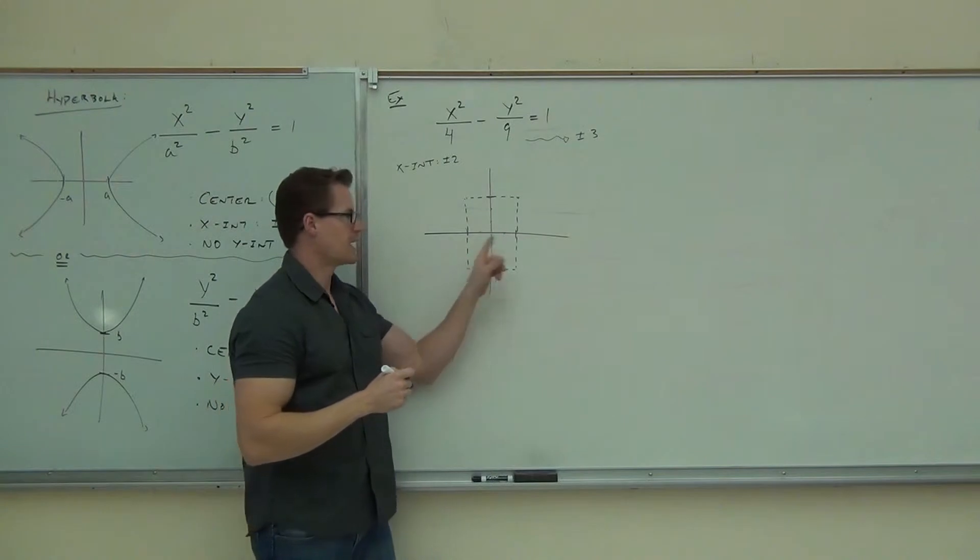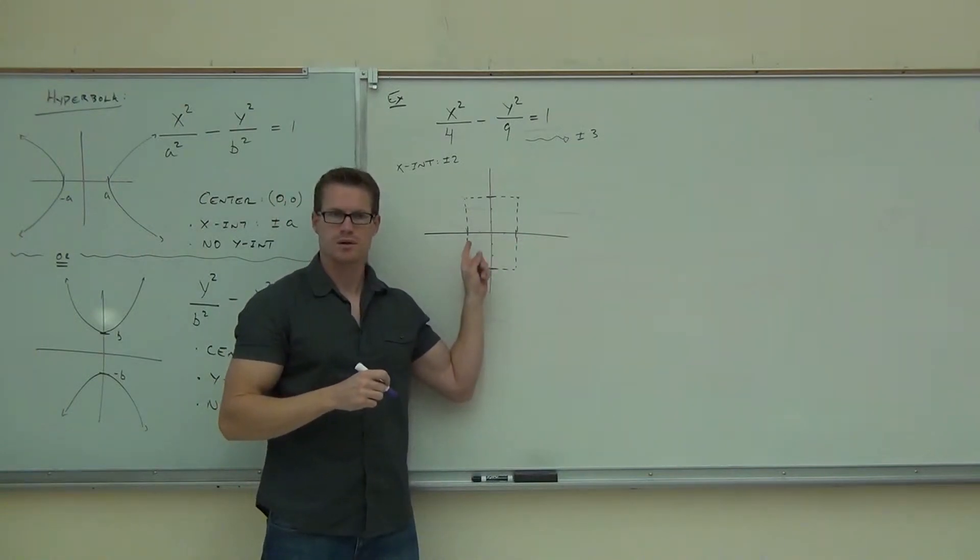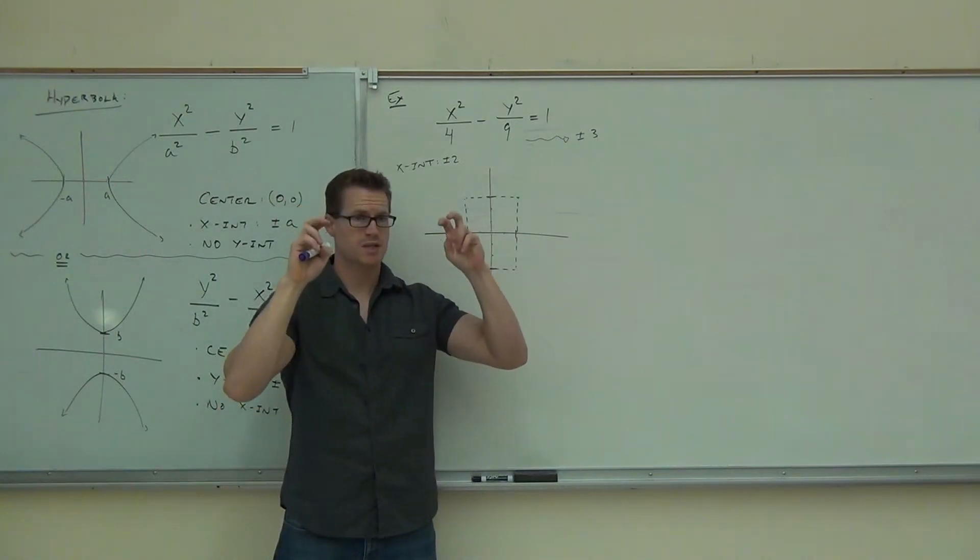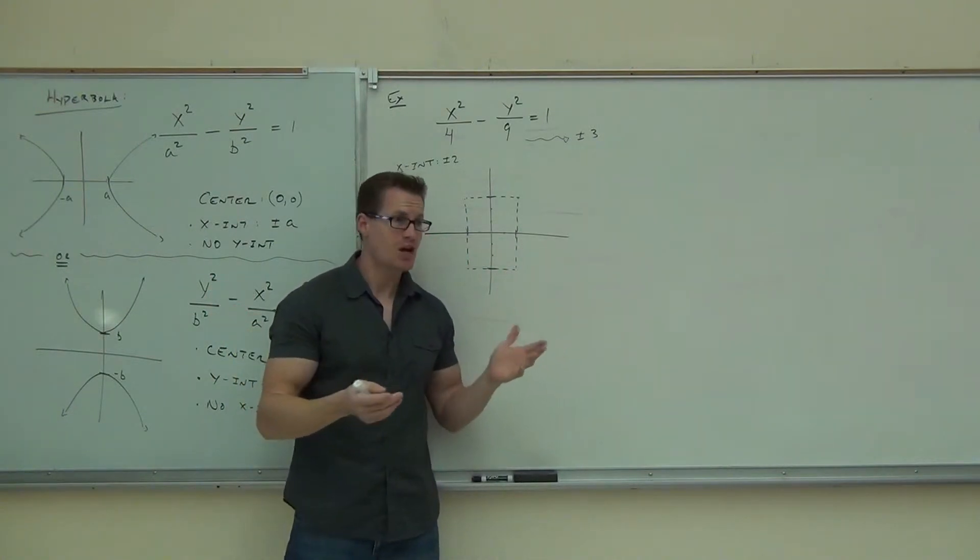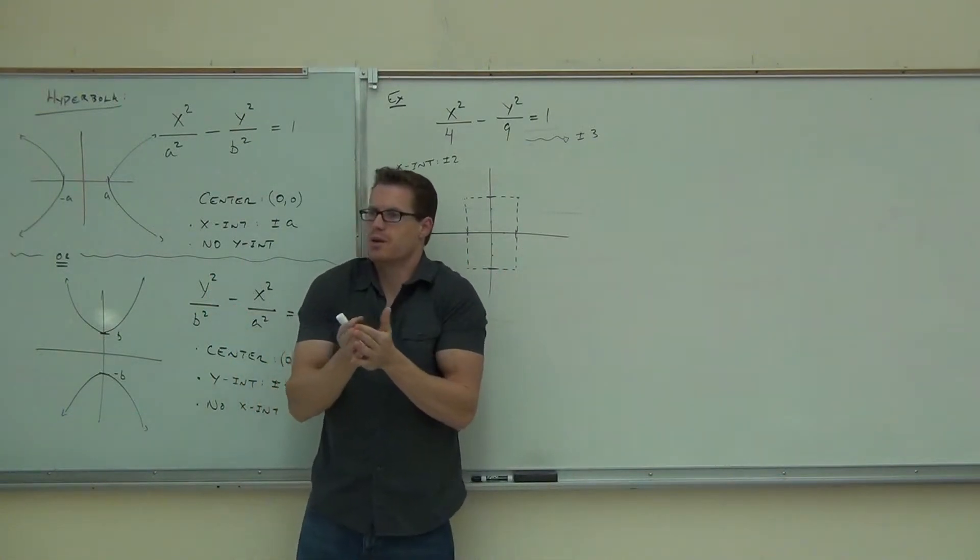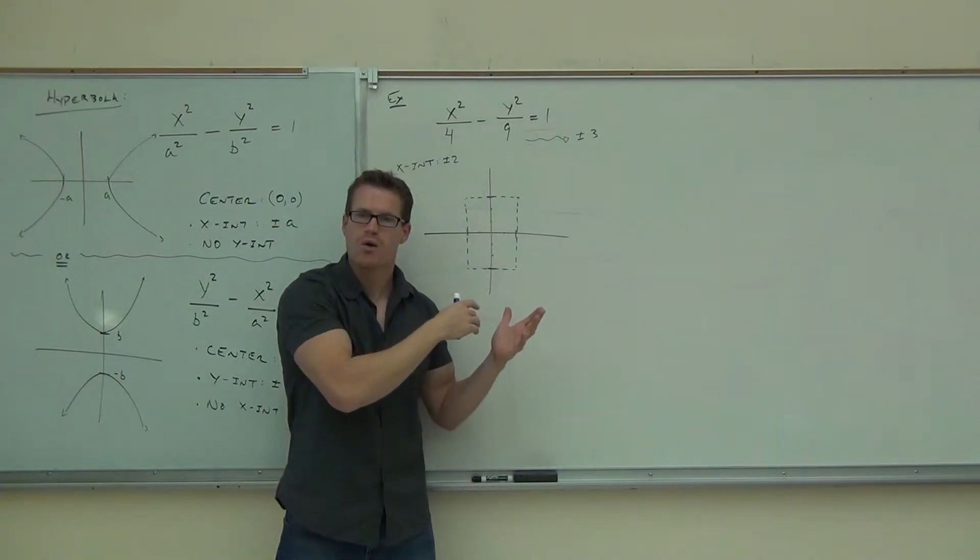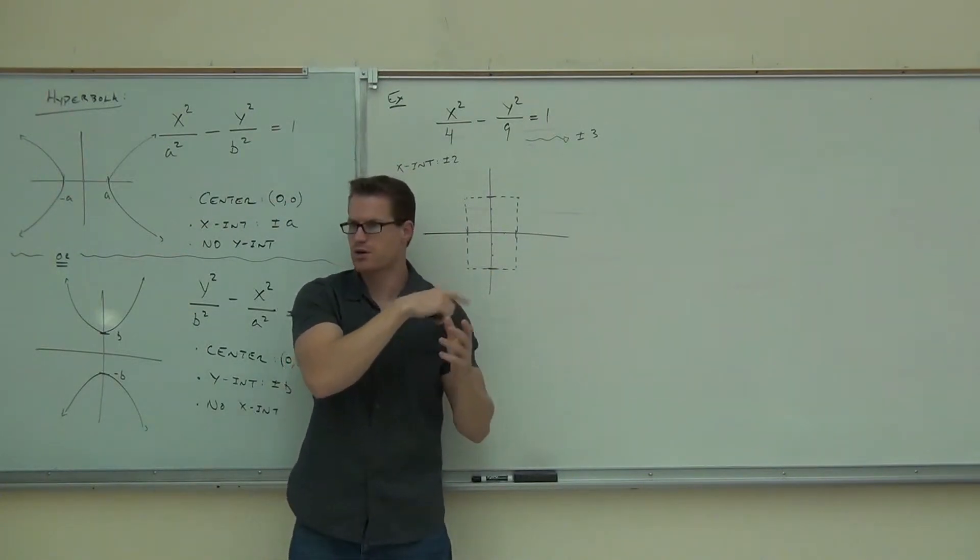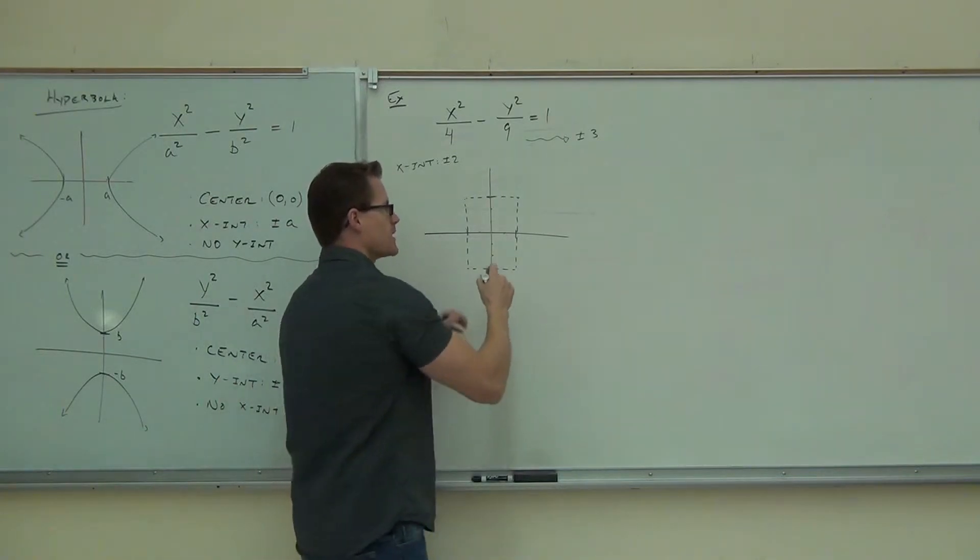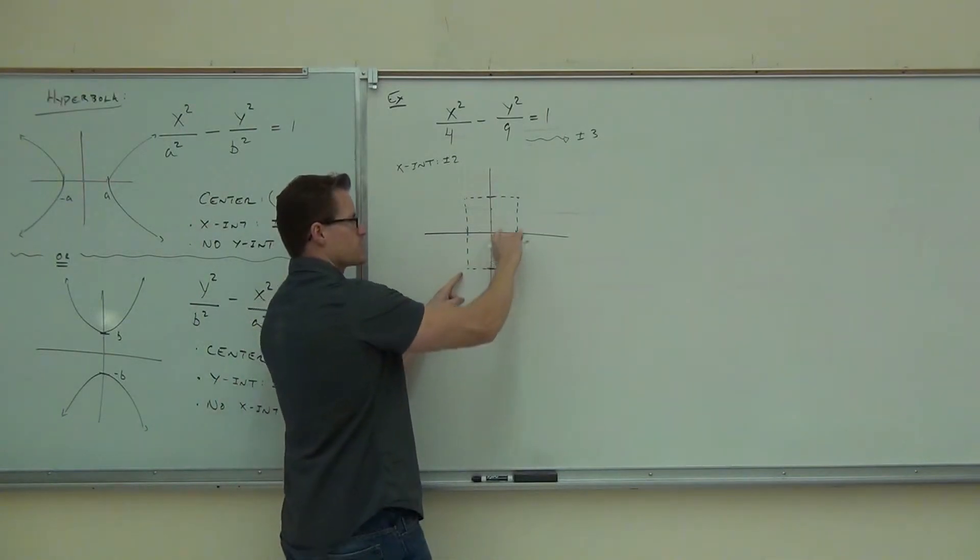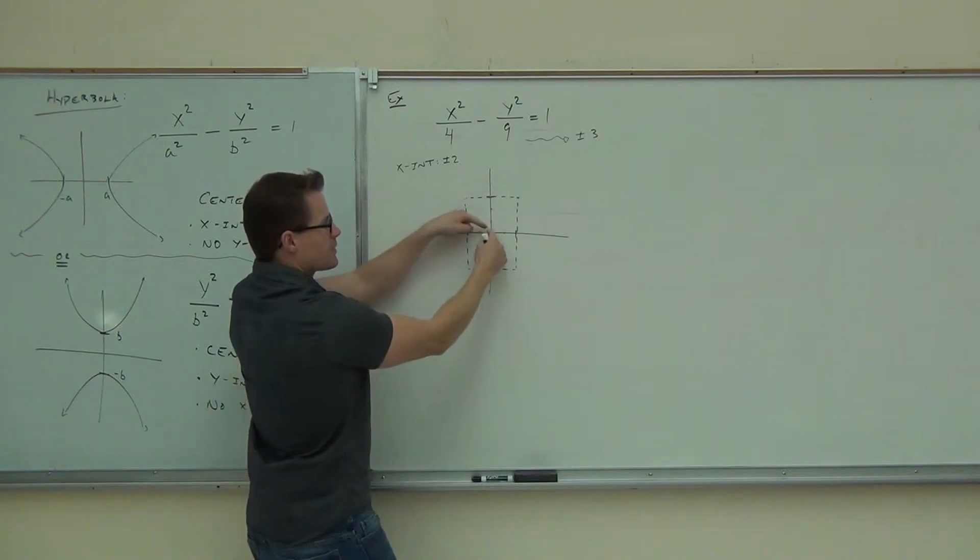Okay, so let's recap. Can you find your X intercepts? Sure. Can you find your Y intercepts, even though you don't really have Y intercepts? Now, what's kind of nice about this, this gives you the shape of your hyperbola inherently with this box. What you're going to do, first, are you okay with your box? What you're going to do now, make a diagonal line that goes through these corners, make a diagonal line that goes through those corners.